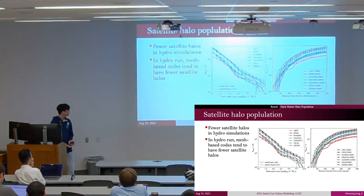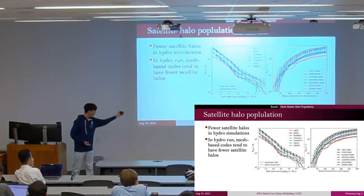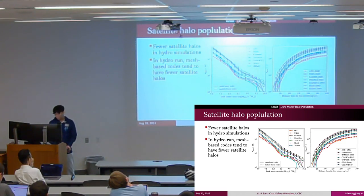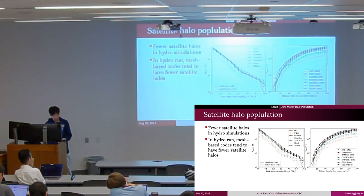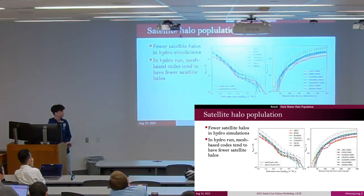We first plotted the cumulative number of satellite halos by their dark matter mass and distance from the host. Once again, we can see the same result: the number of satellite halos is significantly larger in DMO simulations compared to those in hydrodynamic simulations.